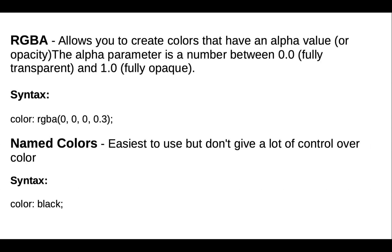Next is RGBA. RGBA stands for Red, Green, Blue, and Alpha. It allows you to create colors that have an alpha value or opacity. The alpha parameter is a number between 0.0 and 1.0, where 0.0 is fully transparent and 1.0 is fully opaque.